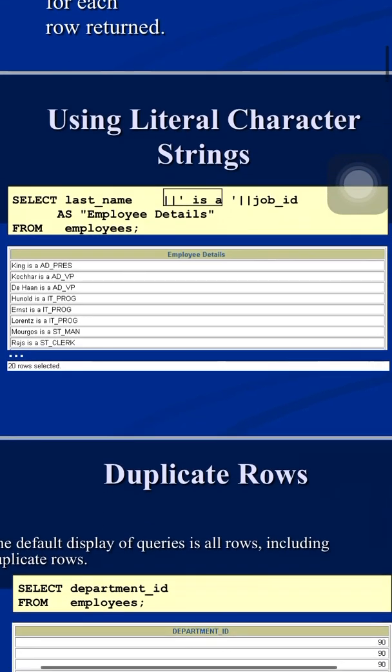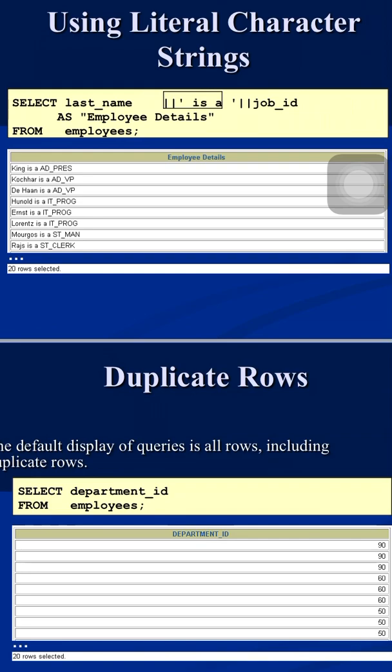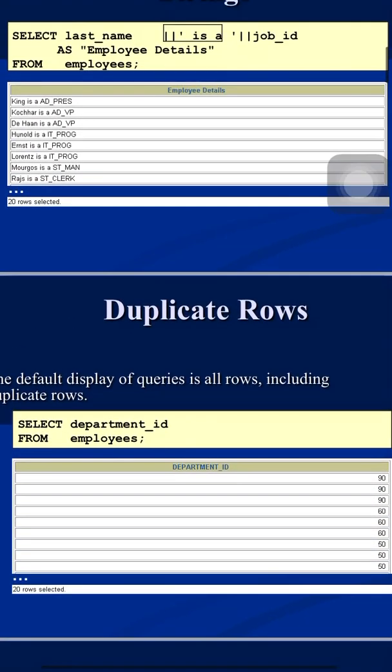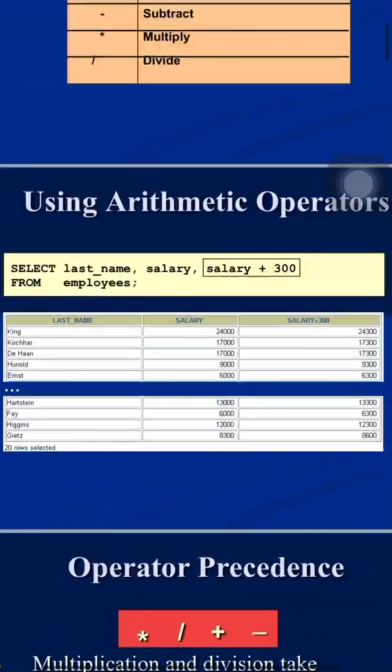Sometimes a query may return duplicate rows in the output. For example, printing department_id from the employees table may show the same department_id multiple times, because multiple employees can work in the same department. For instance, if 16 teachers work in the computer science department, all 16 rows will show the same department_id. It is not a duplicate in the full table, but with respect to that query it appears redundant.